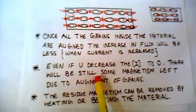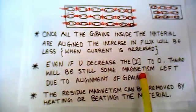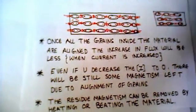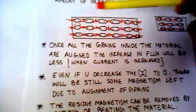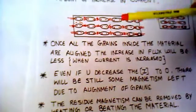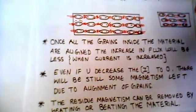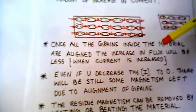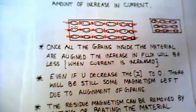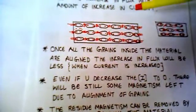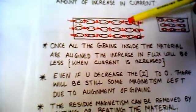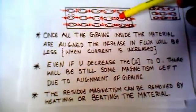There will still be some magnetism left due to the alignment of grains. That means once these grains are already aligned, you can take off the windings and switch off your power supply, and there will still be some residual magnetism left here.